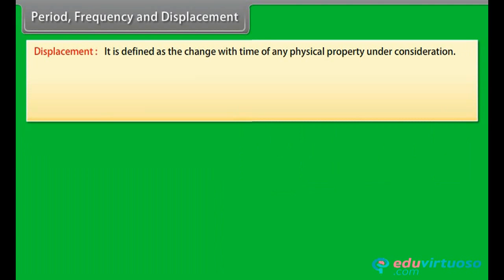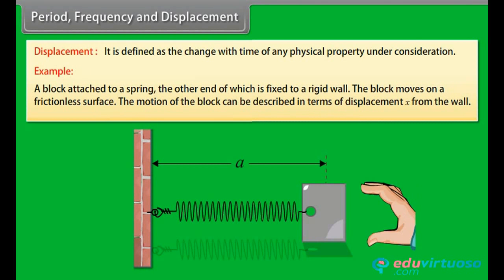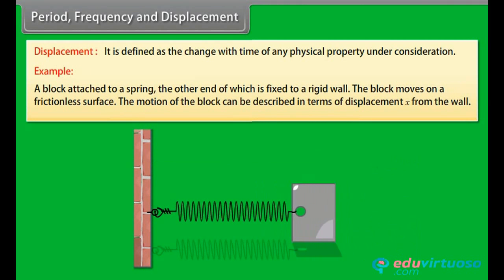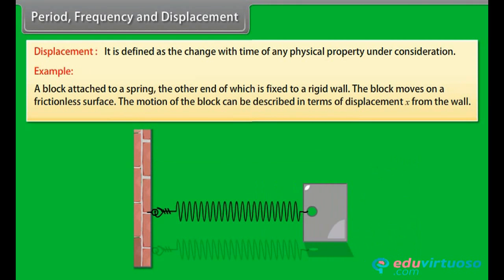Displacement is defined as the change with time of any physical property under consideration. For example, a block attached to a spring — the other end of which is fixed to a rigid wall — moves on a frictionless surface. The motion of the block can be described in terms of displacement X from the wall.